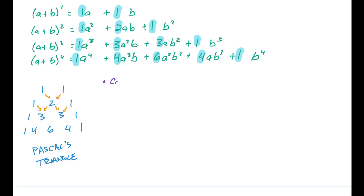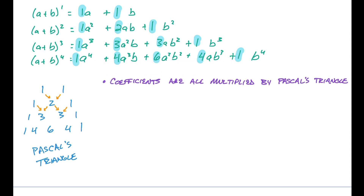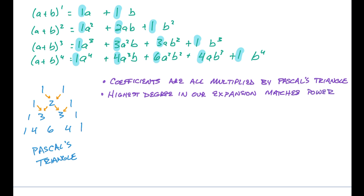So the first pattern we notice is that the coefficients follow Pascal's triangle. Another thing you might notice is that the highest degree in any of these expansions matches the power of the binomial. Here we have first power, second power, third power, fourth power — the highest degree in each expansion matches the power we are multiplying.